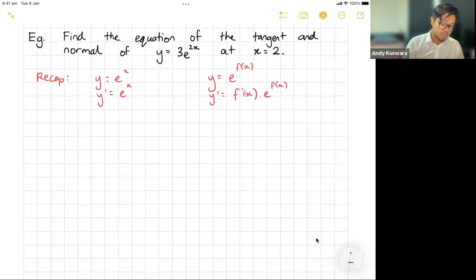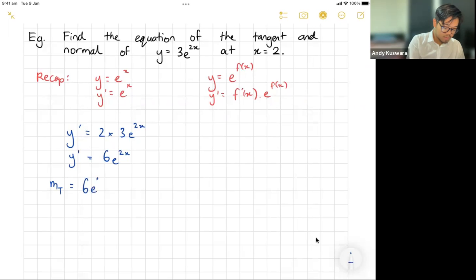With that in mind, let's see if we can tackle this question here. Find the equation of the tangent and the normal of y equals 3e to the 2x at x equals 2. First things first, we need to derive it. So let's do our y dash. Y dash here is going to become: the 2x will differentiate to 2, comes out the front, so it'll be 2 times 3. The 3 stays the same, it's a constant, and then so does your exponential, it stays the same. So in other words, it becomes 6e to the 2x, and there's your y dash.